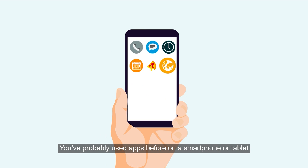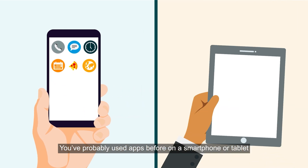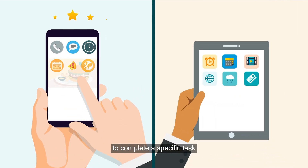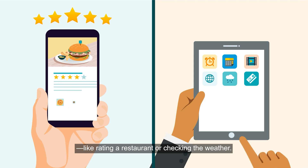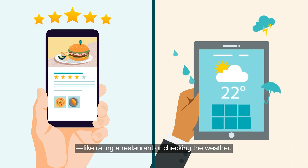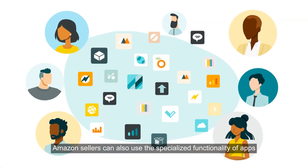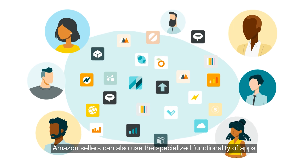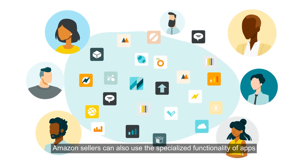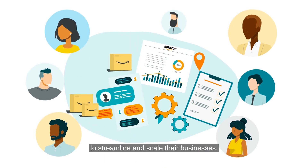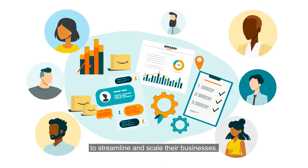You've probably used apps before on a smartphone or tablet to complete a specific task, like rating a restaurant or checking the weather. Amazon sellers can also use the specialized functionality of apps to streamline and scale their businesses.